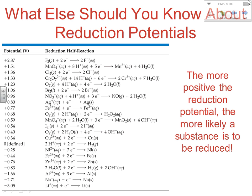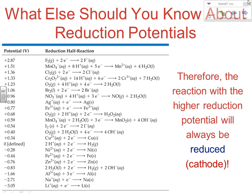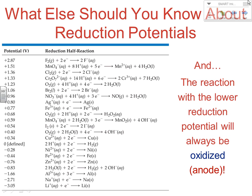What else should we know about reduction potentials? The more positive the reduction potential, the more likely a substance is to be reduced. Between two possible reactions, the one with the higher reduction potential is the one that will be reduced — and reduction takes place at the cathode (red cat). That means the reaction with the lower reduction potential is always going to be the one that's oxidized.